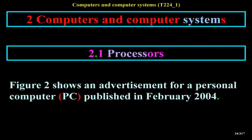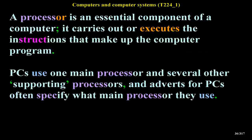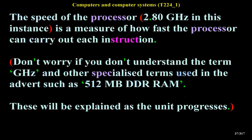Figure 2 shows an advertisement for a personal computer published in February 2004. The main features are listed, with the first item being an Intel Pentium 4 Processor running at 2.80GHz. A processor is an essential component of a computer — it carries out or executes the instructions that make up the computer program. PCs use one main processor and several supporting processors, and adverts often specify the main processor used. The speed of 2.80GHz is a measure of how fast the processor can carry out each instruction. Terms like 512MB DDR RAM will be explained as the unit progresses.